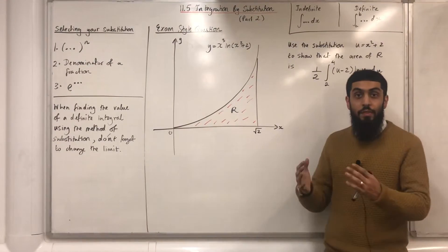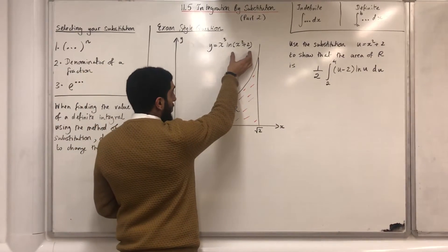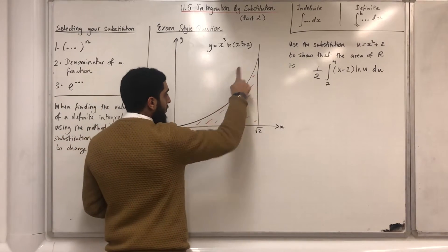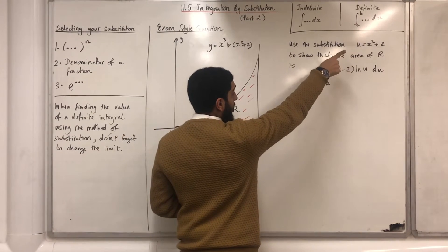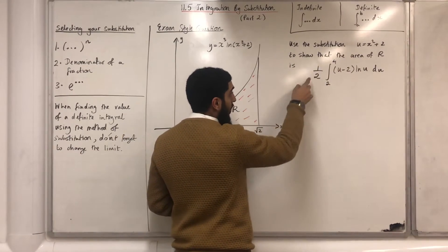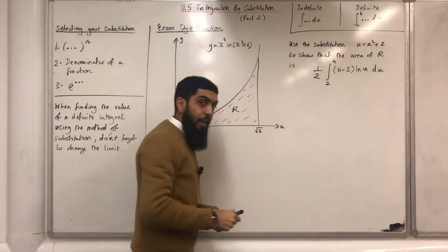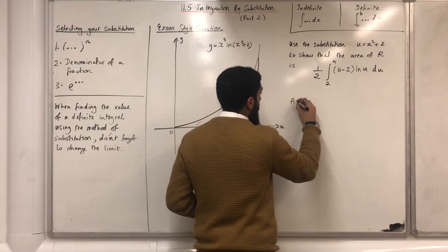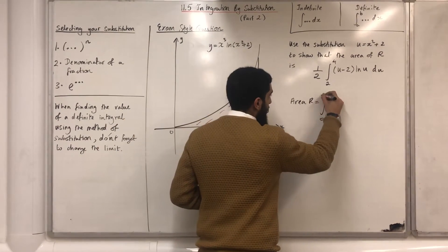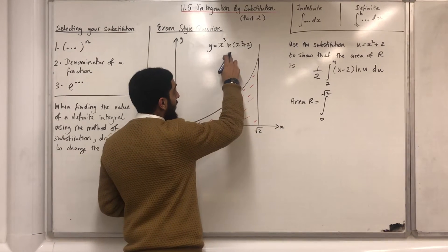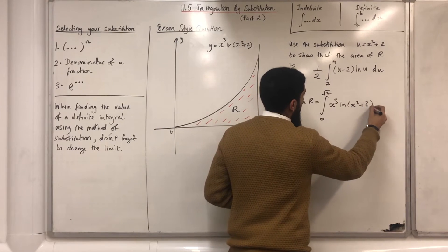Here is the final exam style question of this video. We are given the graph of y = x³ · ln(x² + 2). The area R is bounded by the curve, the x-axis, and the line x = √2. Use the substitution u = x² + 2 to show that the area of R is equal to a half times the integral from 2 to 4 of (u − 2) ln(u) du. The first step is to note that the area R is given by the integral from 0 to √2 of x³ · ln(x² + 2) dx.